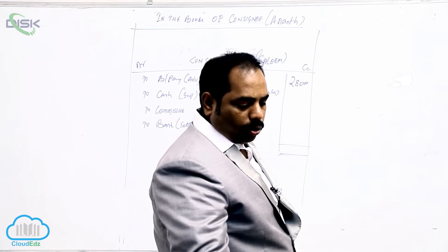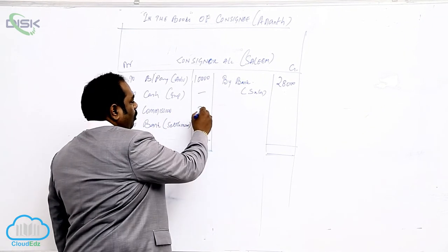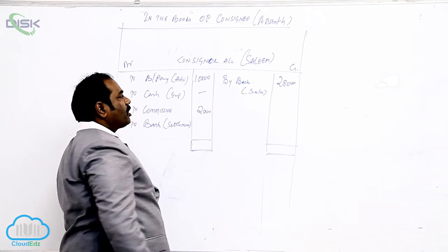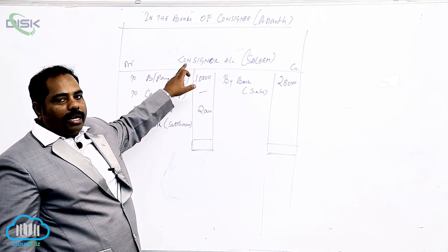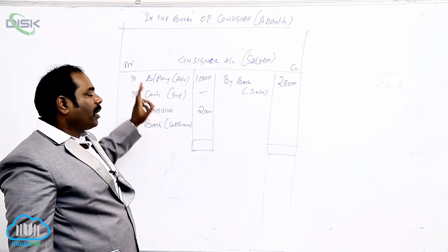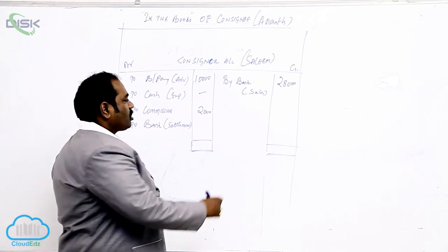Agent's commission is what? 2,000. The commission is 2,000. There is no expense given in the problem - commission. Commission is an income for whom? Consignee. The entry - who has to pay the commission? Consigner. Consigner becomes our debtor. So consigner we are debiting him to commission.